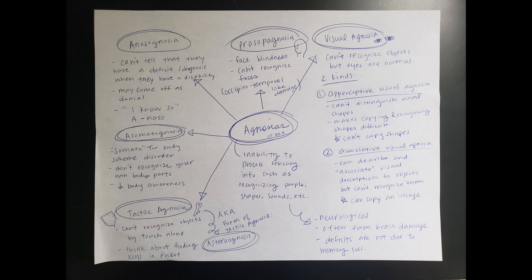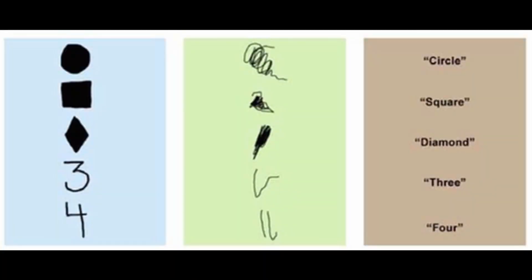There are two major kinds of visual agnosia. The first is perceptive visual agnosia, which means you can't distinguish visual shapes, making copying and recognizing shapes quite difficult. If you were to present someone with perceptive visual agnosia shapes to copy, they're going to have a hard time. I remember this by thinking of visual perceptual skills — the 'a' prefix means without, so this person does not have visual perceptive skills.